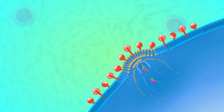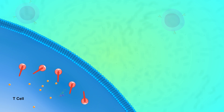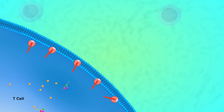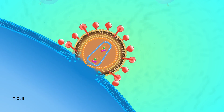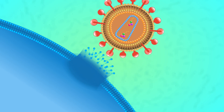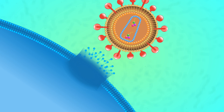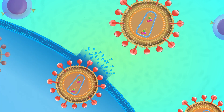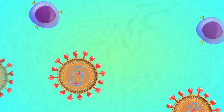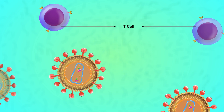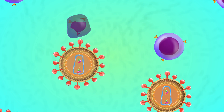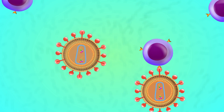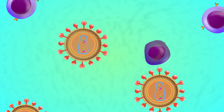However, as these new viruses leave the T cell, they rupture the plasma membrane, which kills the cell. As these newly released viruses invade and destroy other T cells, the body's immune response is weakened and this leads directly to the onset of AIDS.